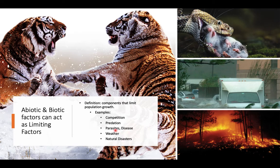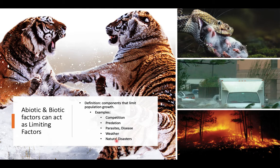Parasites and disease also act as limits to population growth. The Spanish flu and the Black Plague were viruses that killed large numbers of people, limiting population growth. Even COVID-19 has shown how disease limits populations, though not to the same historical extent. Weather and natural disasters can also act as limiting factors. We'll talk more about this in lesson three, but that's it for lesson two — I hope you enjoyed it and have a great day.